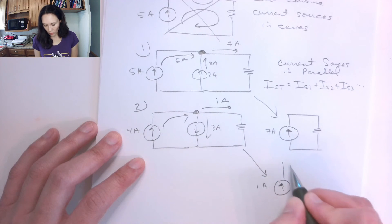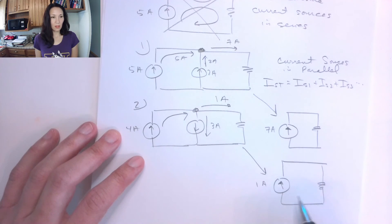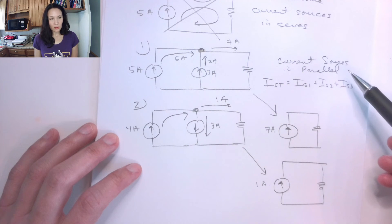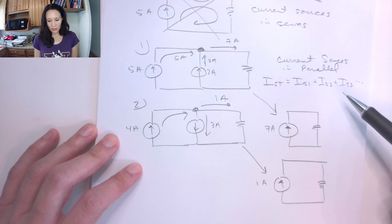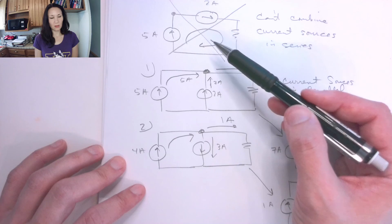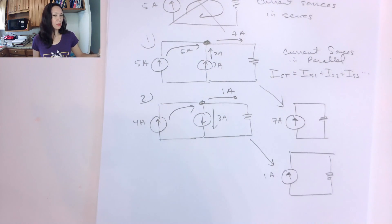So I can replace this with 1 current source of value 1 amp connected to my resistant load. This is how we would combine current sources in parallel. We just add them up as if they are voltage sources in series, but remember we cannot connect them in series. Let me know if you have any questions for combining sources, and we will move on to source transformations.